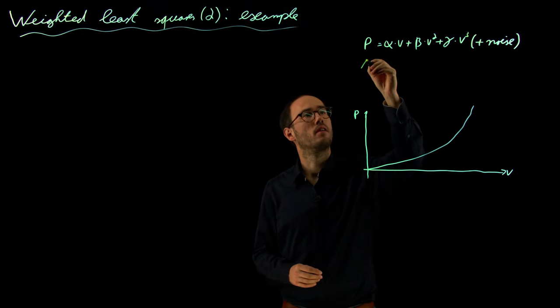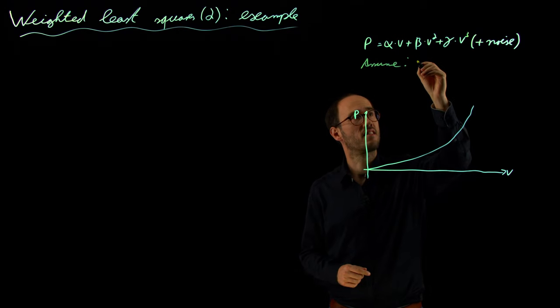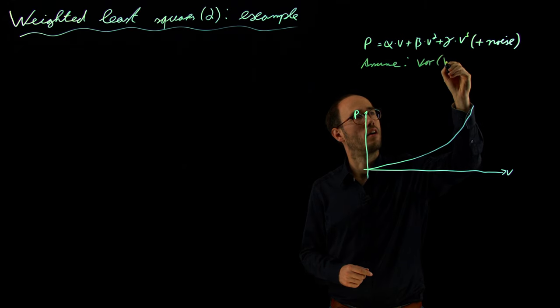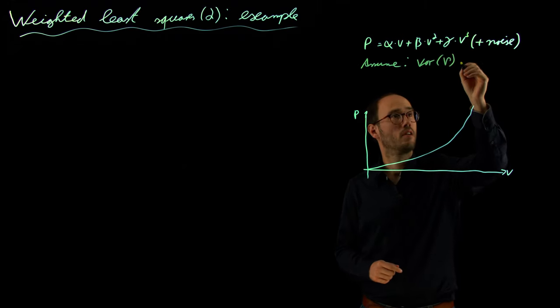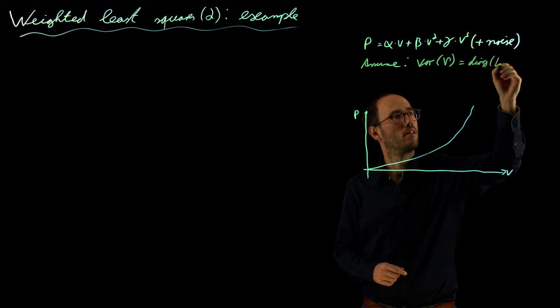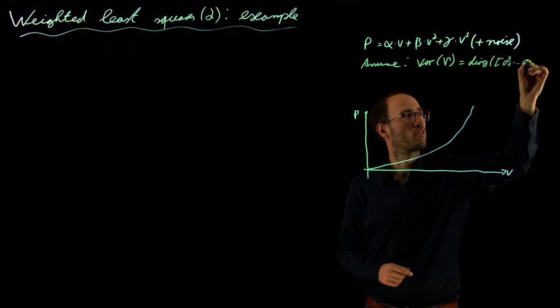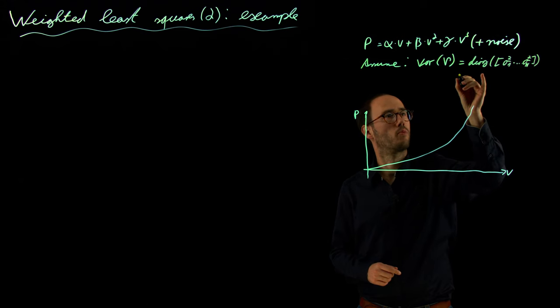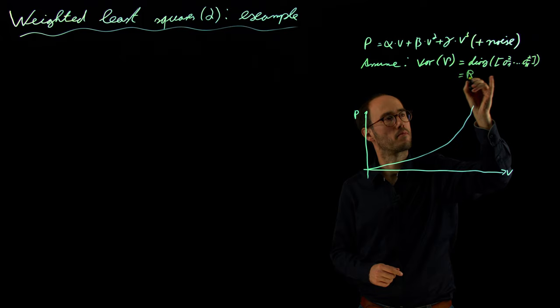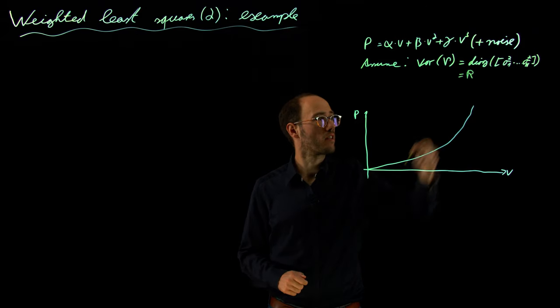we will assume a little bit different noise conditions and this is that the variance of our noise is equal to a diagonal matrix with entries sigma one square to sigma n square. And this will be basically our covariance matrix, capital R,